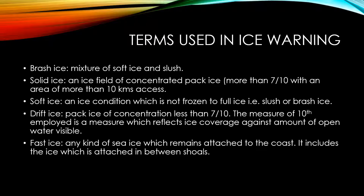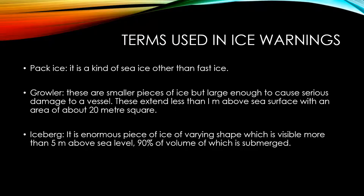Drift ice is a kind of pack ice of concentration less than 7 by 10, where the measure of tenths reflects ice coverage against the amount of open water visible. Fast ice is any kind of sea ice which remains attached to the coast, including sea ice attached between shoals. Pack ice is a kind of sea ice other than fast ice. Growlers are smaller pieces of ice but large enough to cause serious damage to a vessel; they extend less than 1 meter above sea surface with an area of about 20 meters squared. Icebergs are enormous pieces of ice of varying shape, visible more than 5 meters above sea level, with 90 percent of their volume submerged below the sea.